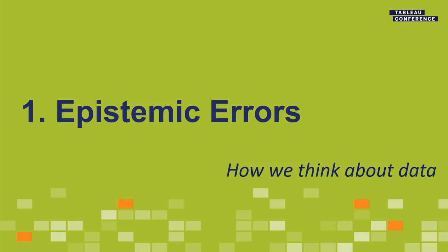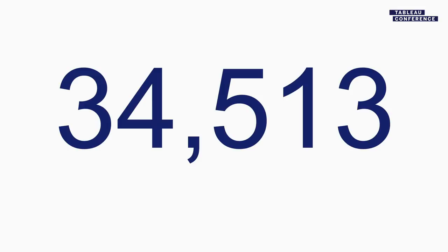Number one: epistemic errors — how we think about data. Epistemology is the theory of knowledge, especially with regard to its methods, validity, and scope. Another way to think about it is investigating what distinguishes justified belief from opinion. I'll start with a number: 34,513. That's the number of meteorites recorded to have fallen since 2500 BC, all the way up to when the data was last pulled by my friend Ramon Martinez back in 2012. Ramon is a fabulous visualization designer who works at the Pan American Health Organization.